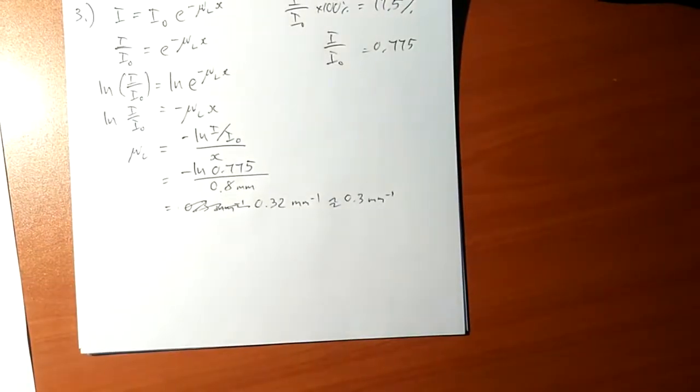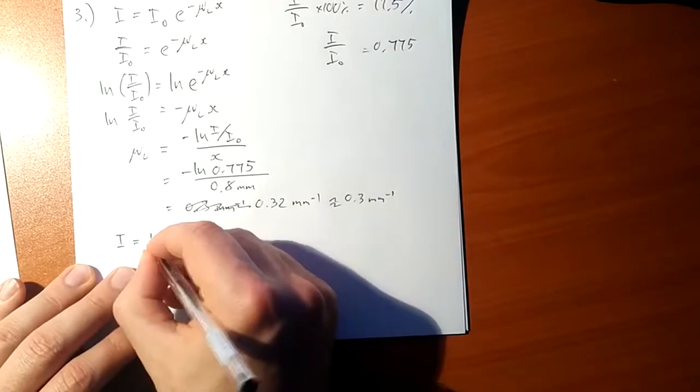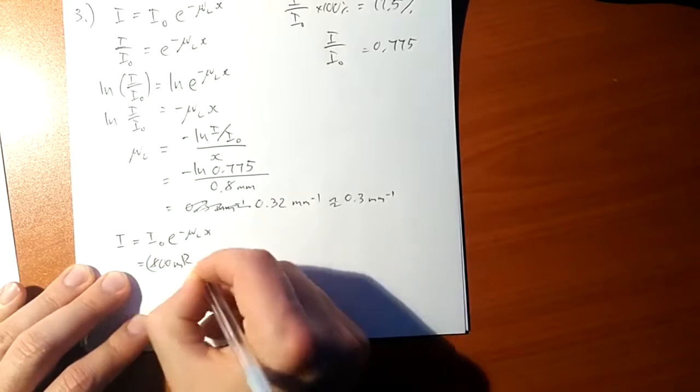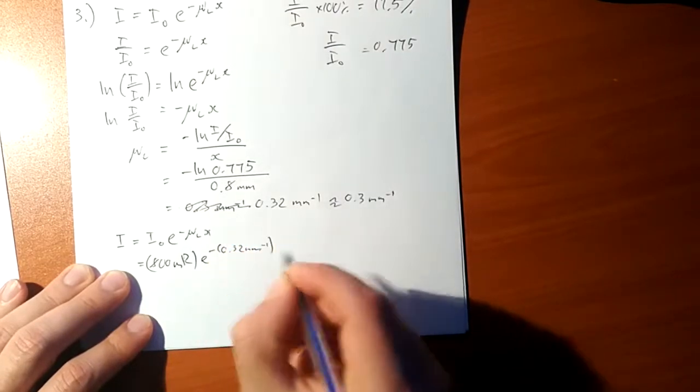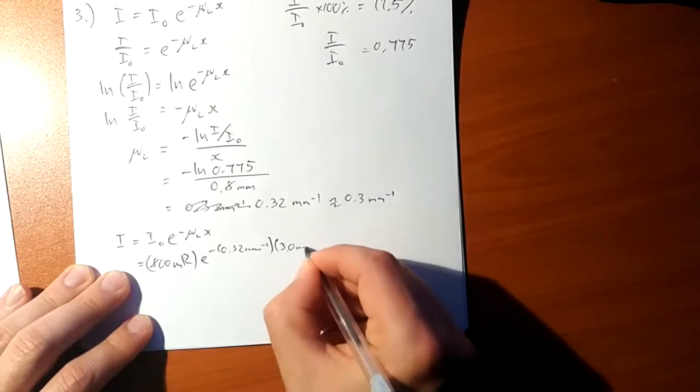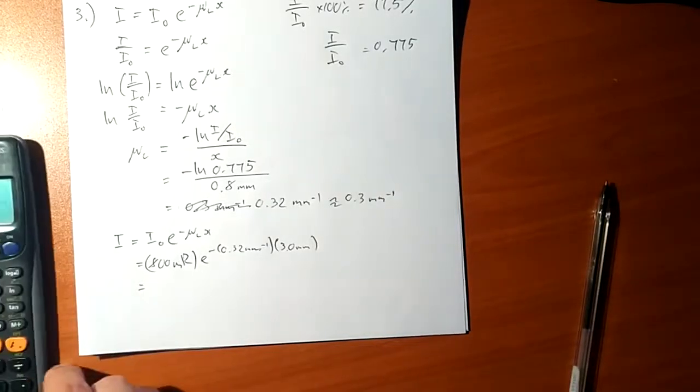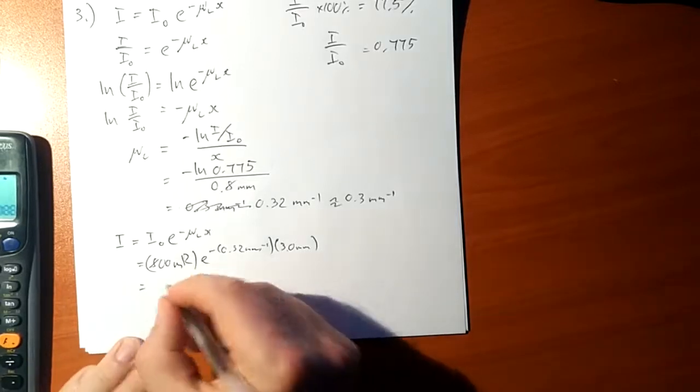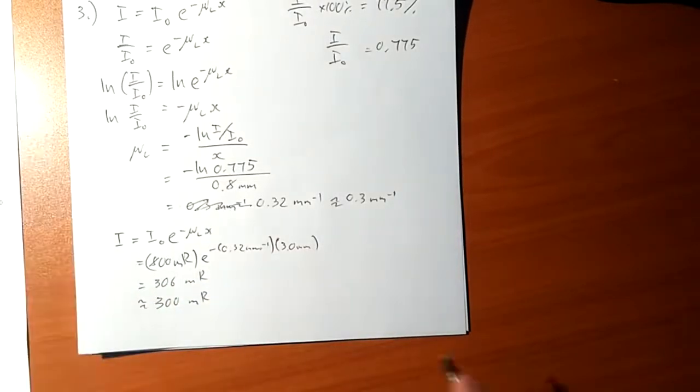So now what do we want? What is the actual intensity? So the intensity after 3 millimeters will be, let's just write the formula again: I equals I₀ e to the minus μₗ x. So it's going to be 800, and it's what it was initially, times e to the minus - I'm going to put the accurate one here - and x is what? 3 millimeters, 3.0 millimeters. So let's see what that gives us. e to the power minus 0.32 times 3, times 800. 306. But I'm only really sure about one significant figure. So there's the intensity after 3 millimeters.